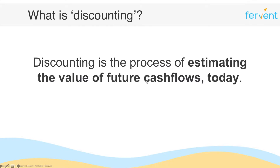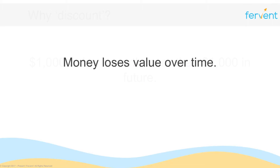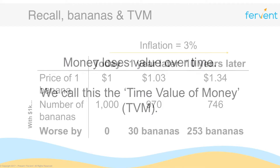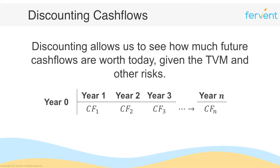Why do we need to do that? Because $1,000 today is worth more than $1,000 in the future — money loses value over time. We called this fact the time value of money, and you literally saw this in the bananas example, where we went from being able to buy 1,000 bananas to only 746 bananas. At a process level, discounting allows us to see how much future cash flows are worth to us today, given the time value of money as well as other risks.